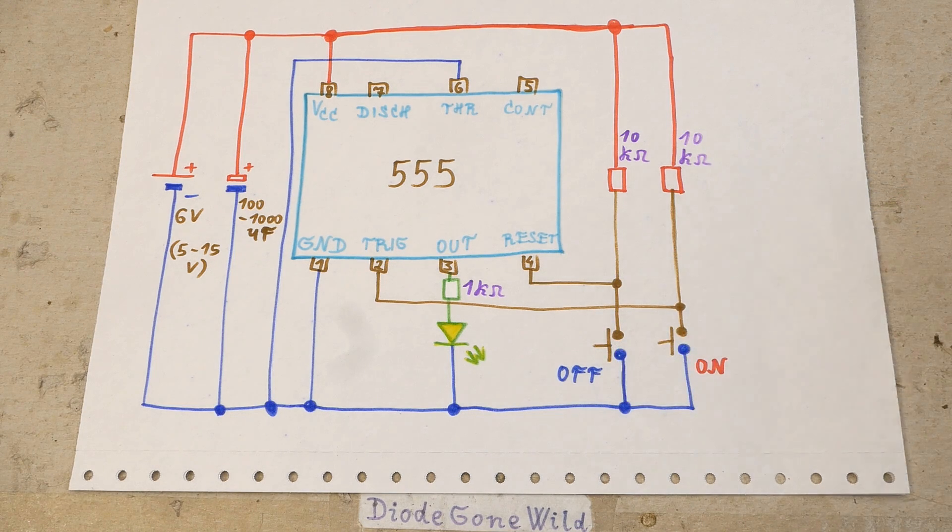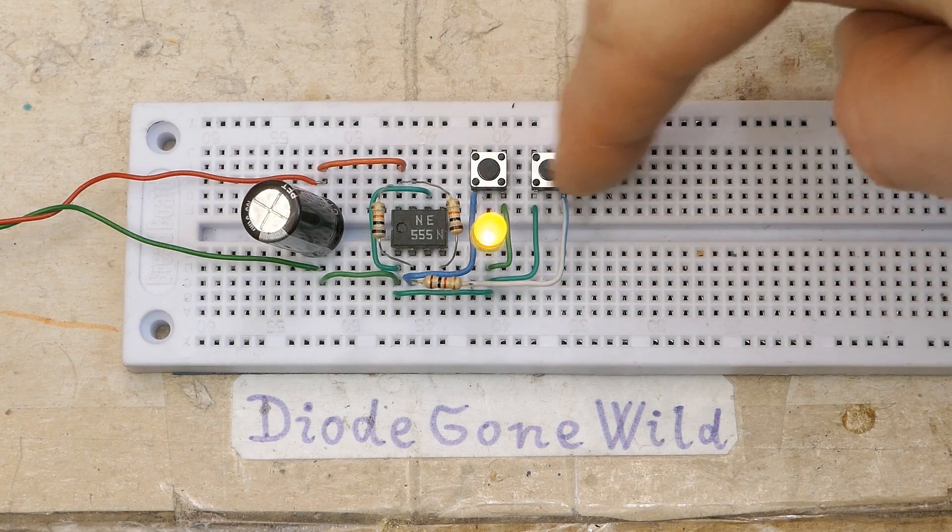The buttons activate the inputs by pulling the voltage down on them. And when the button is not pressed, the voltage is pulled up using these pull-up resistors. So that's a simple two button on-off circuit.